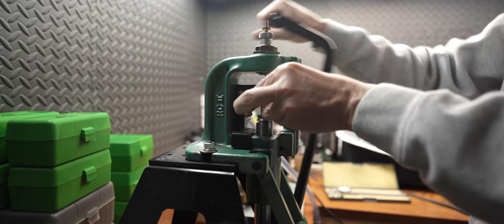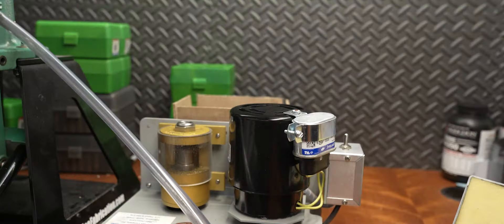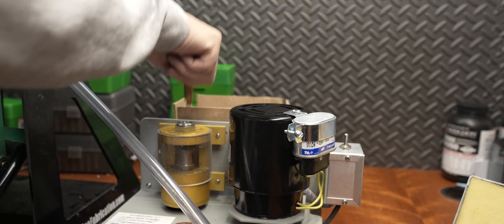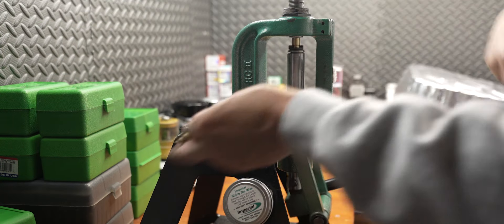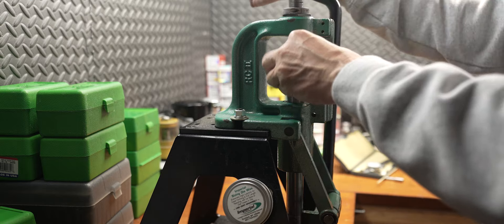The first difference is bullet grip. I increase the bullet grip for PRS because I don't want the bullets randomly reseating themselves being fed from a magazine. It can happen. I have done it to myself on purpose to see where the limit is, and I want to make sure that I have enough neck grip that the bullet isn't going to change depth when it goes slamming into the feed ramp.